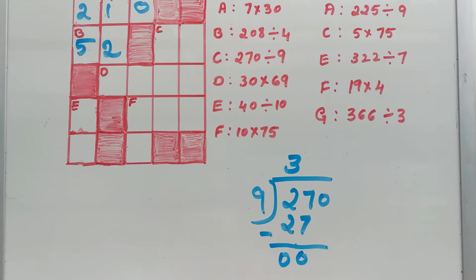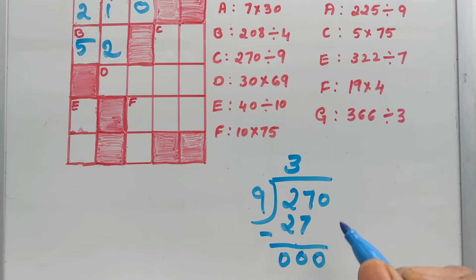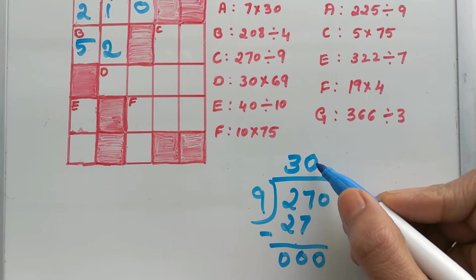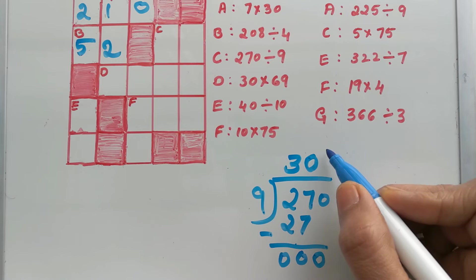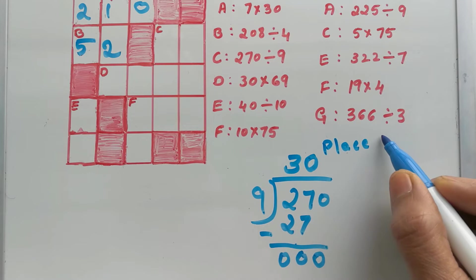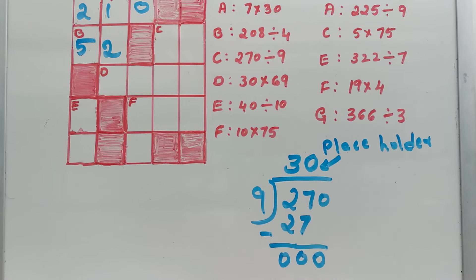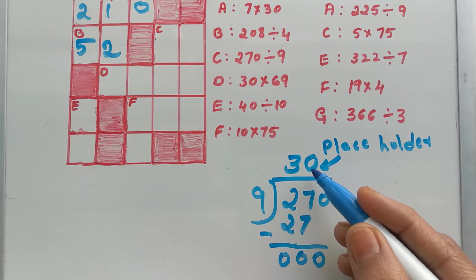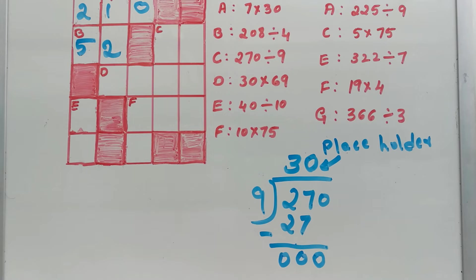Next step: subtraction. 27 minus 27 is 0. Now bring down the next number, which is 0. After bringing down a 0, you have to write 0 in the quotient also — this is called a placeholder. You cannot leave it as is. So our answer is 30, because 30 times 9 is 270.